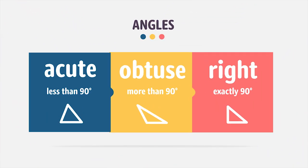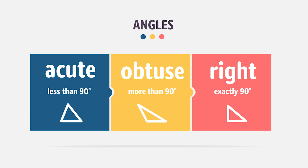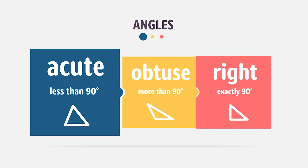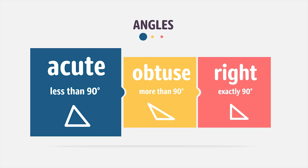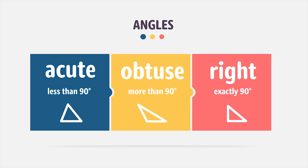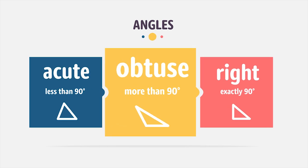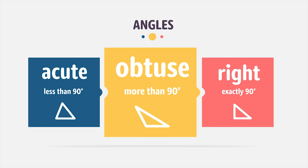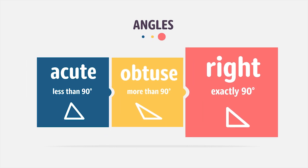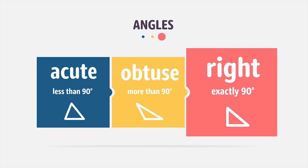There are three main types of angles. An acute angle measures less than 90 degrees. An obtuse angle measures more than 90 degrees. A right angle measures exactly 90 degrees.